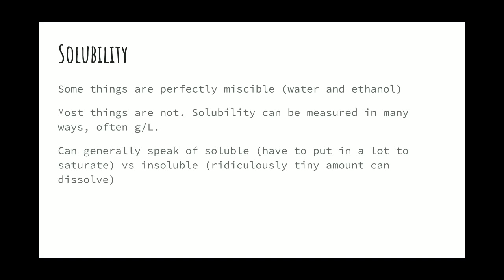A soluble thing is where you can throw it into solution and you have to add a significant amount before it becomes saturated. For example, NaCl is soluble in water. That doesn't mean that it's infinitely soluble. It's not perfectly miscible. It's not like ethanol. But you have to throw in a significant amount of sodium chloride before it becomes saturated.